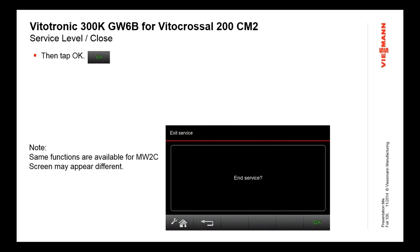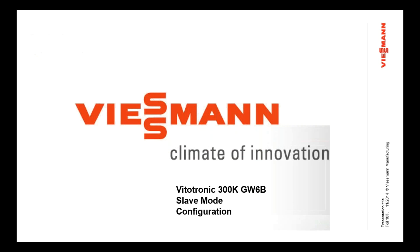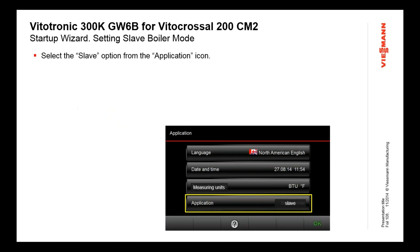You'll get a prompt confirming that you want to end the service — you say yes or OK. In slave mode, which is a little different from single boiler mode, you would pick 'slave' from the startup configuration for the GW6B control — again, this is for VitoTROL CM2. The home screen looks different: you see less information than in single boiler or cascade mode, because the slave doesn't have to do as much.